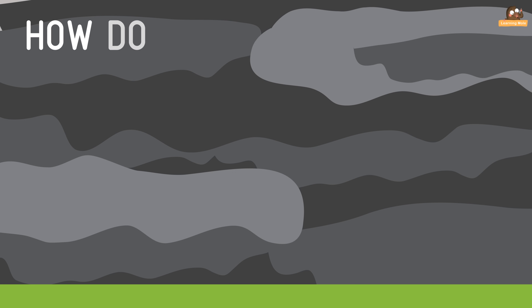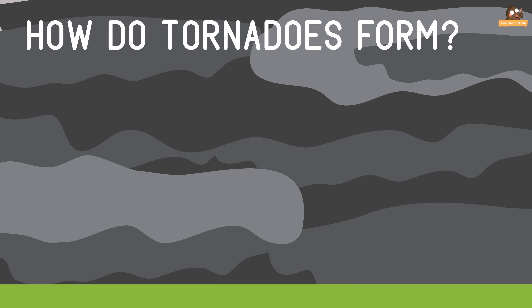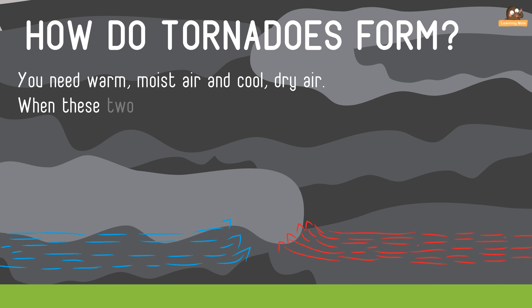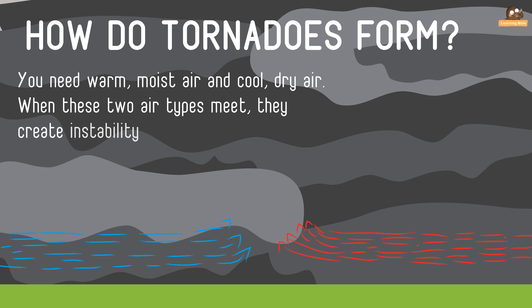How do tornadoes form? Most tornadoes form from thunderstorms. You need warm, moist air and cool dry air. When these two air types meet, they create instability in the atmosphere.